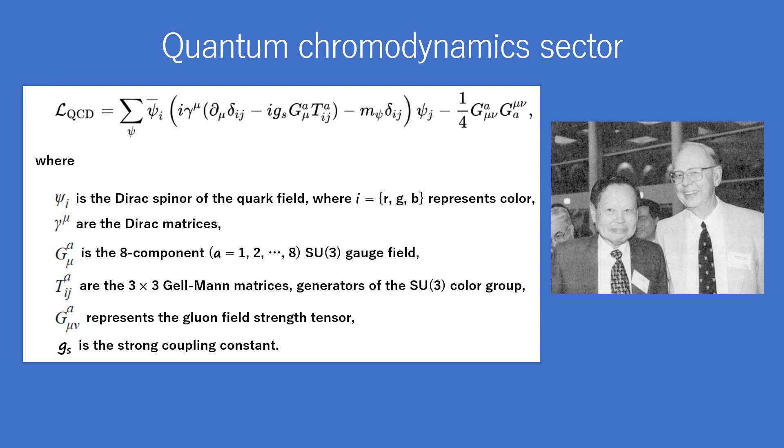The Dirac Lagrangian of the quarks coupled to the gluon fields is given, where ψᵢ is the Dirac spinor of the quark field. γᵘ are the Dirac matrices, and Gᵃᵘ is the eight-component SU(3) gauge field.